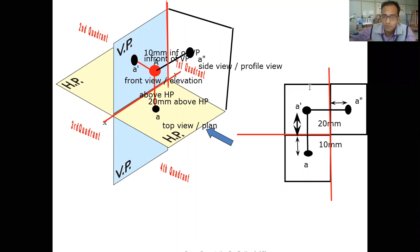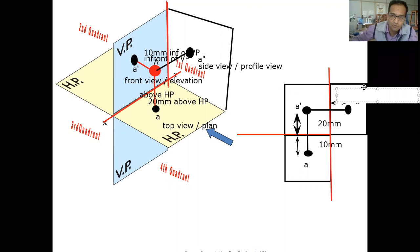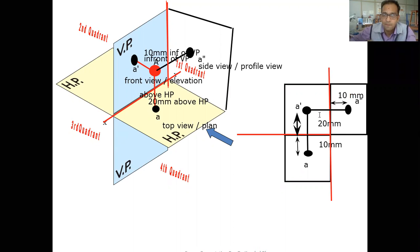The distance between the vertical reference and the profile view of point A is going to be the same distance which indicates the distance of the point from the vertical plane. This is the profile view projection of point A. Whenever we consider a point in any quadrant, we have to make sure that its projection is drafted in a proper manner.